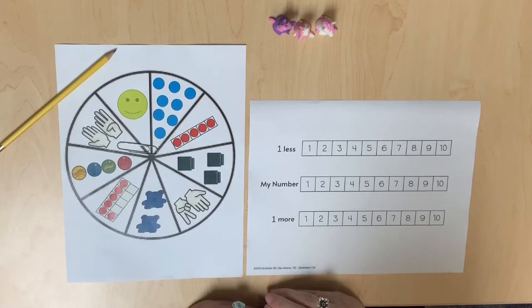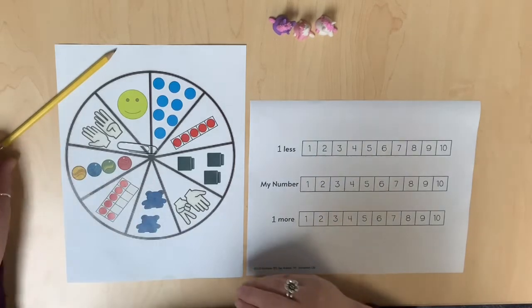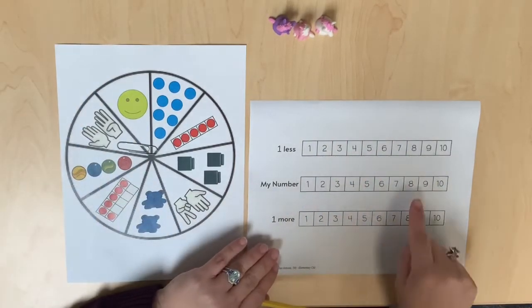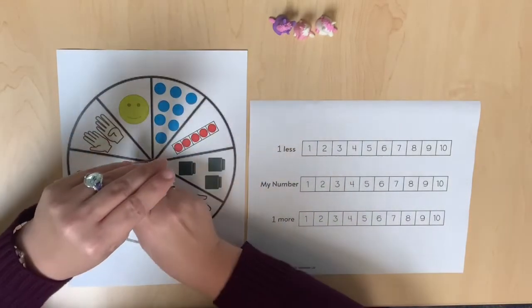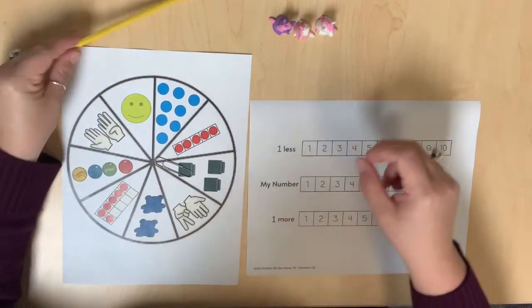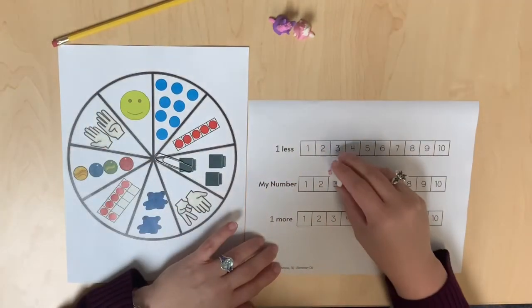Students can also use the number path to generate numbers that are one more than or one less than a given number. Using three horizontal number paths, students can use a spinner to generate a starting quantity. Model this quantity using a counter on the middle number path.